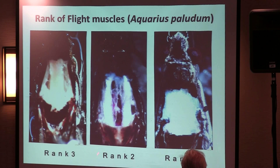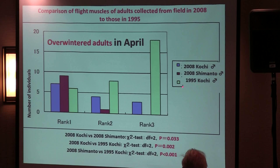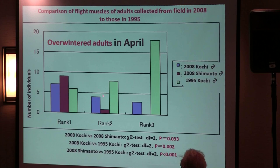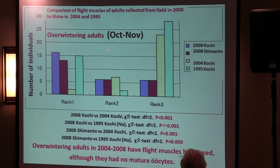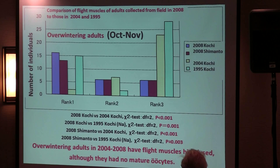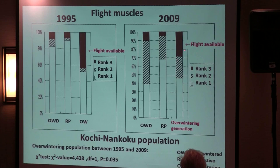In 1995, overwintered adults in April showed many flyable individuals. But in 2008, so many adults could not fly at all. The same pattern appeared in autumn. In 1995, many flyable adults were found, but by 2008, already, they could not fly. Also in 2009, in the overwintering fall generation, flyable available individuals were very low.